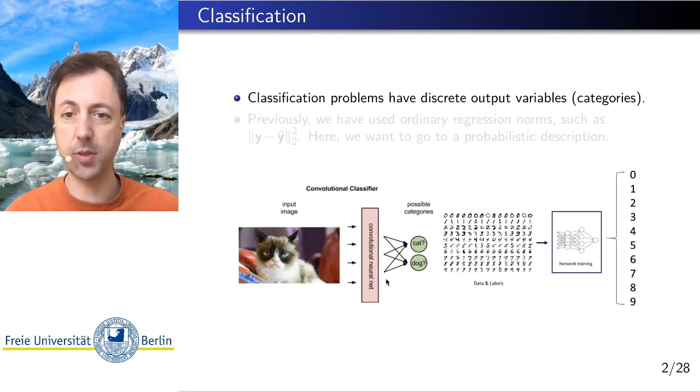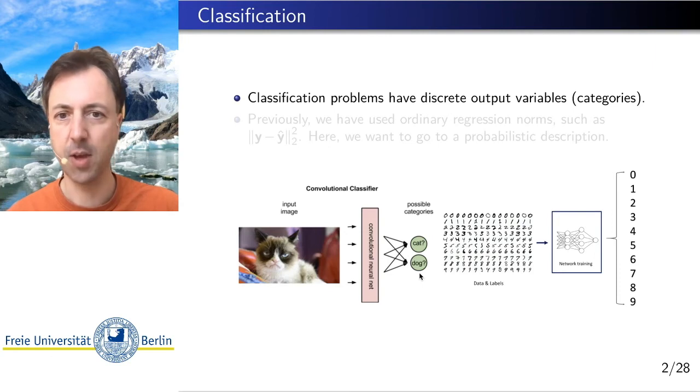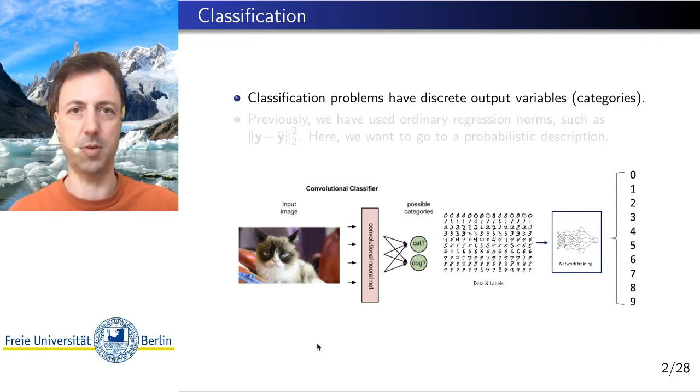We have used softmax outputs previously in order to encode the classification at the output. That means at some point you have a linear layer at the output and you map this through a softmax function. The softmax function maps every output neuron to a value between 0 and 1 and makes sure that the sum of these output neurons equals 1. So you can interpret this output as probabilistic classification, or in other words the probability of finding a certain class given the input image. That's a probabilistic interpretation of what the neural network does.